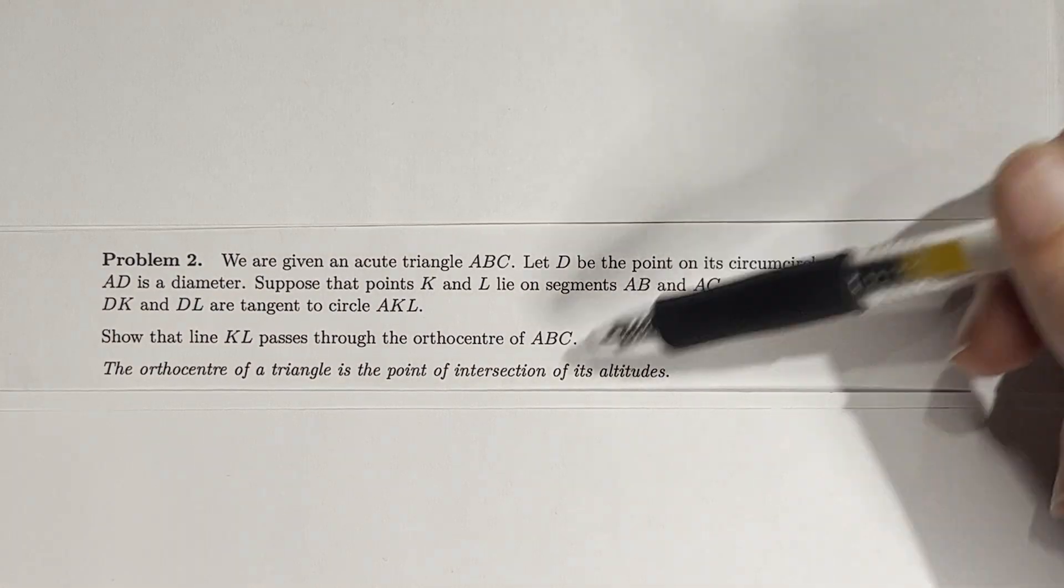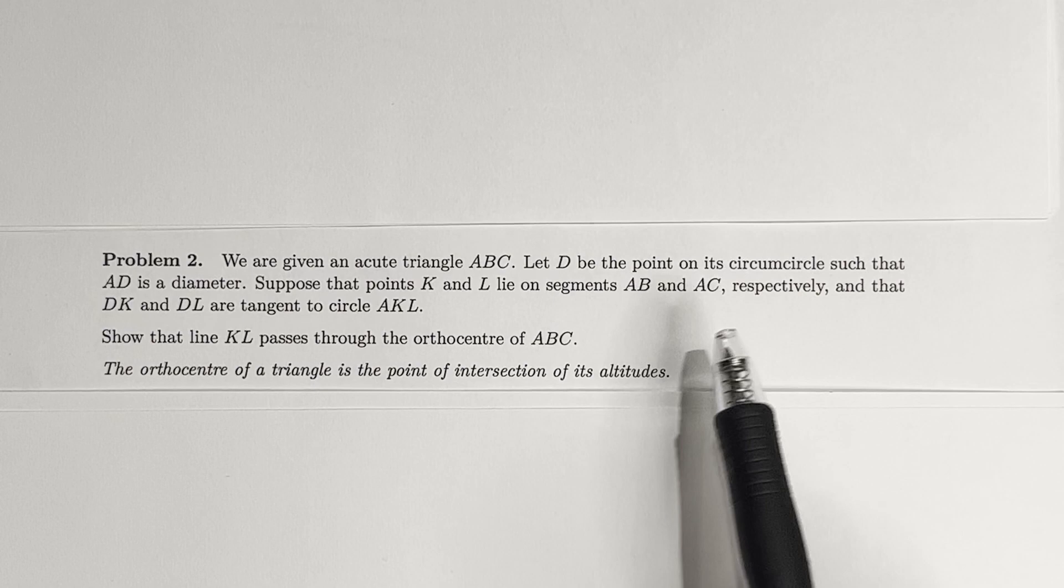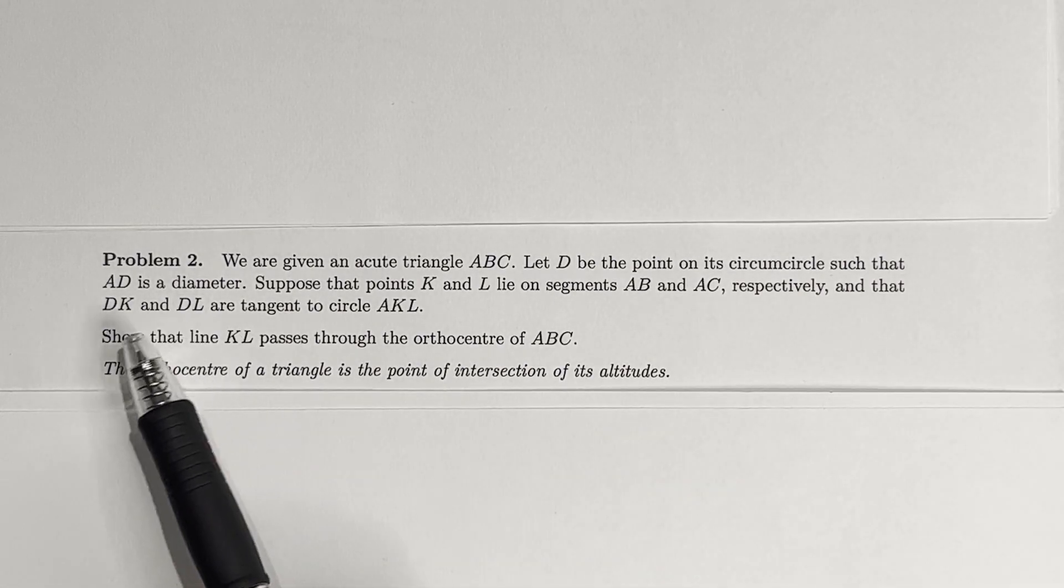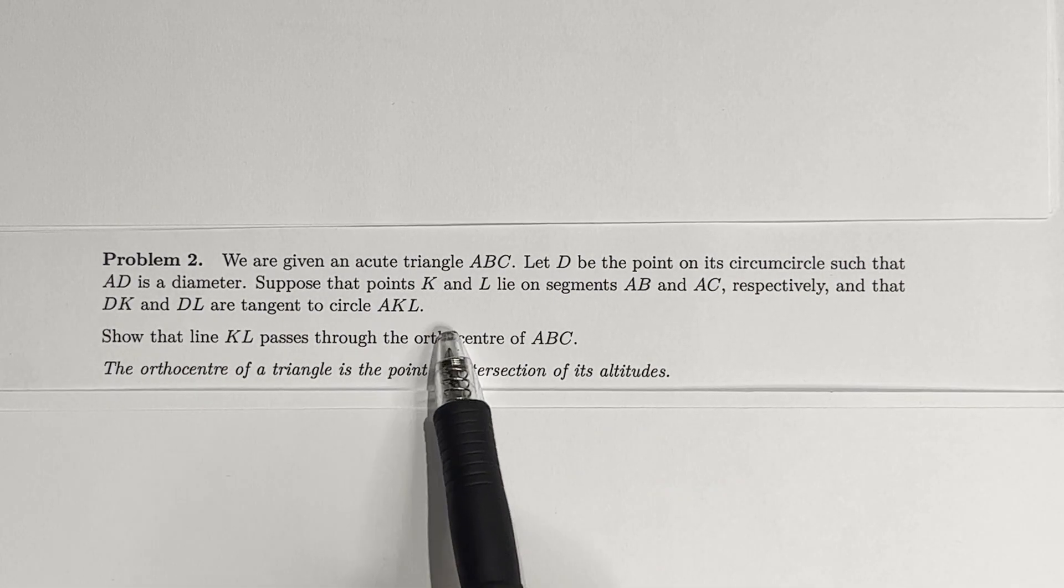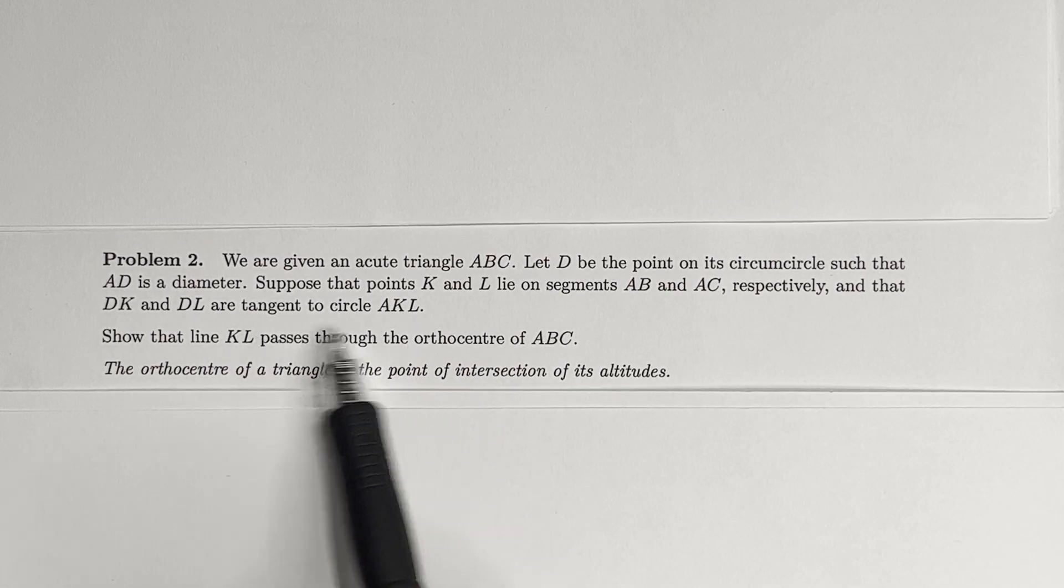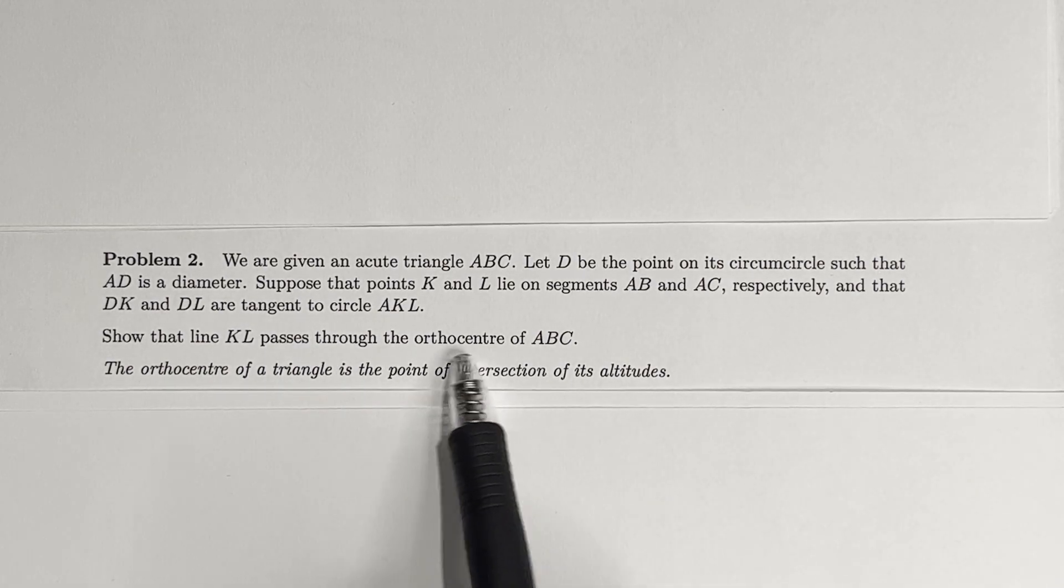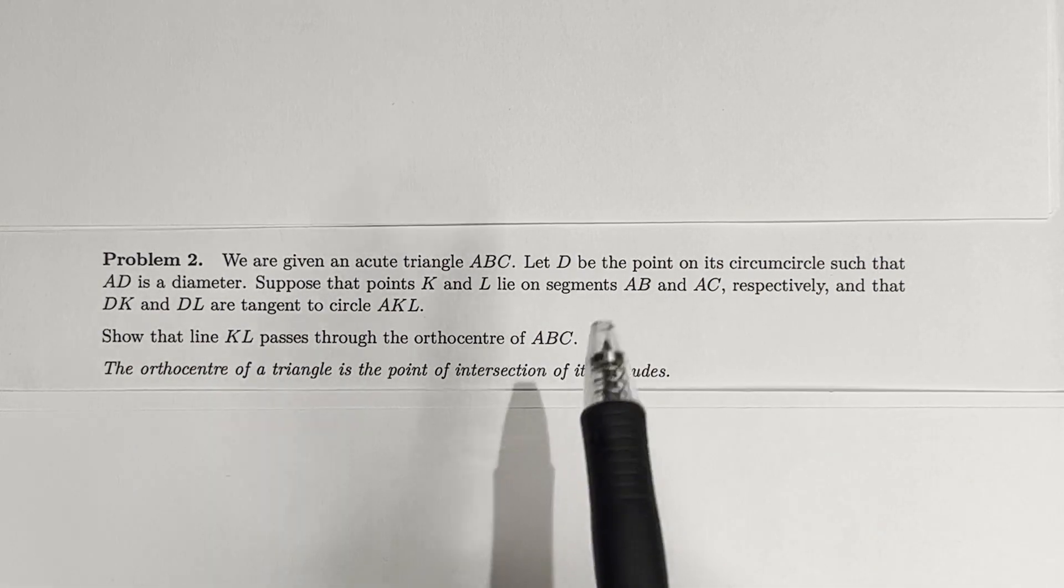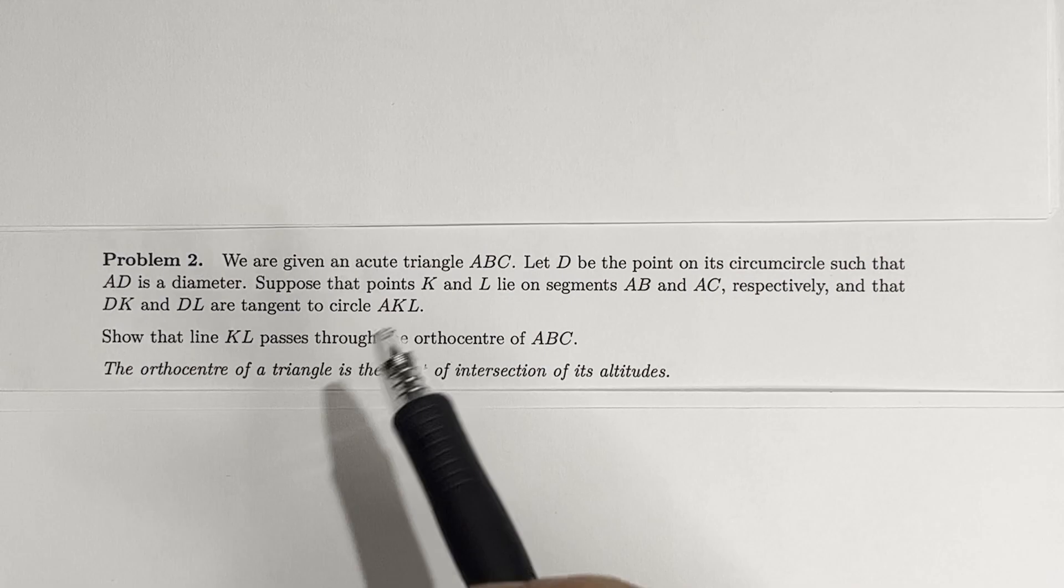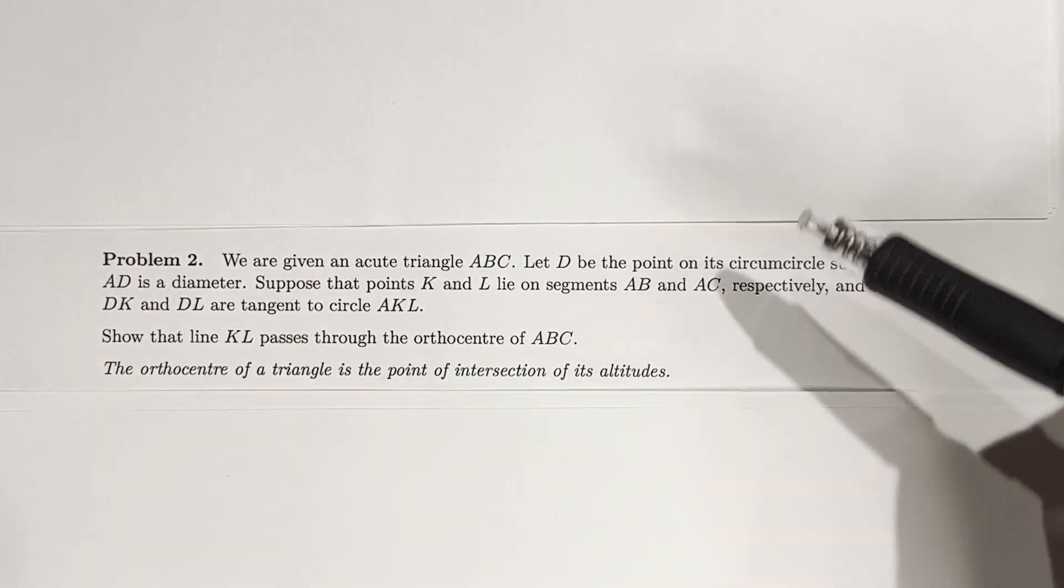Oh look, we have a D, okay, such that A is D's diameter, and then K and L lie on these segments, such that DK and DL are tangents to AKL. Wow, how do we draw K and L? How do we even construct them? And then I sure showed this passage through the art center. Sounds scary. But how do we make it? How do we make the K and L? Where did the K and L come from? That is the big, big, big question here.